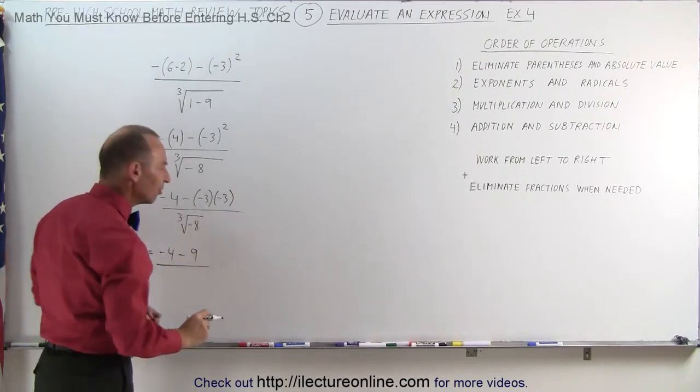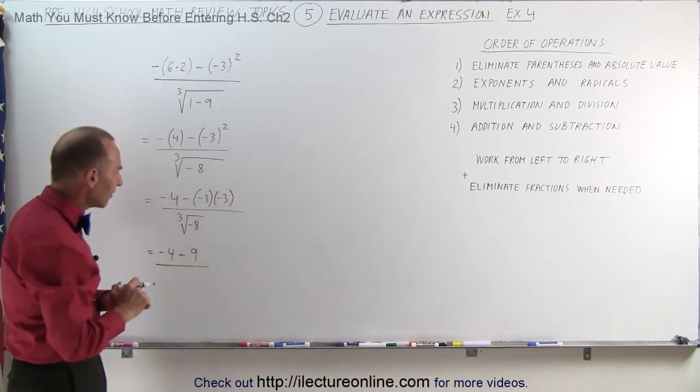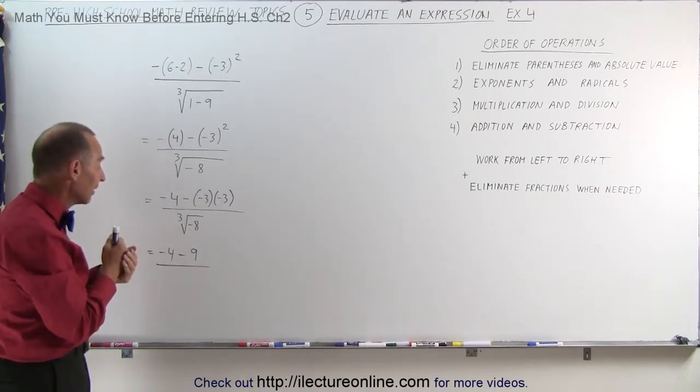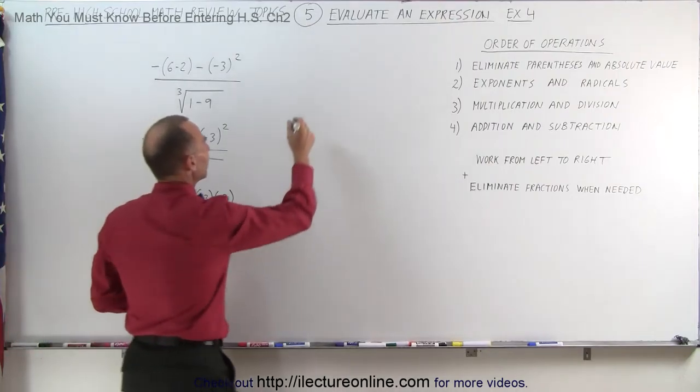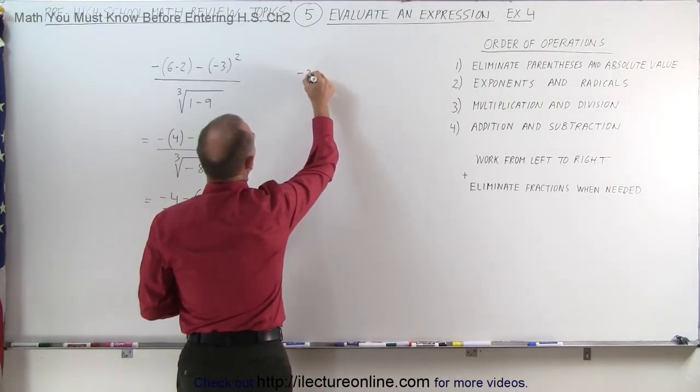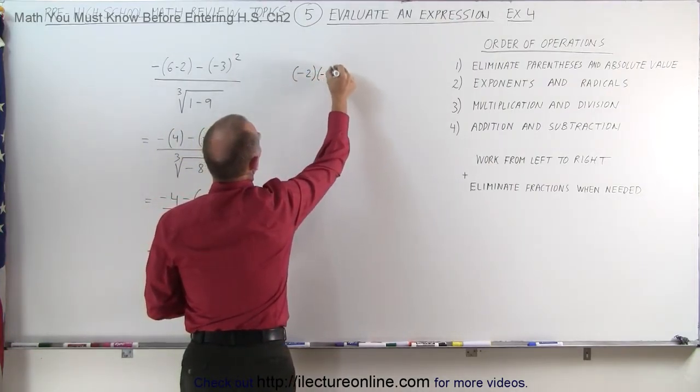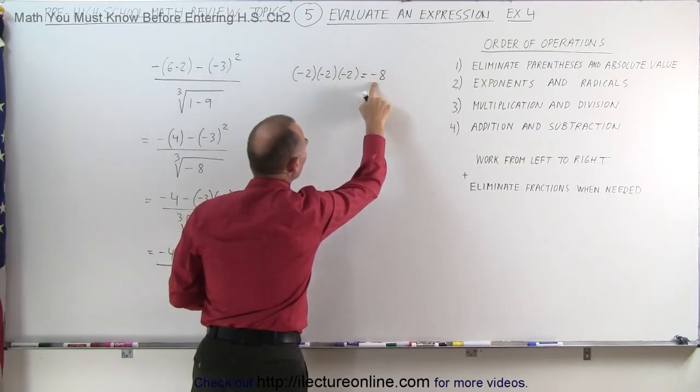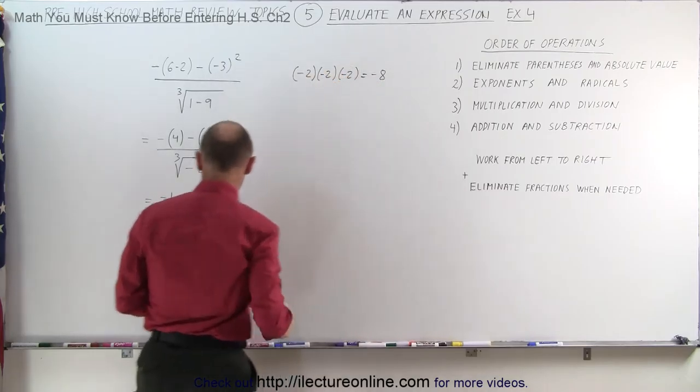Divided by, what's the cube root of minus 8? Well, I'm looking for a number when I multiply it by itself 3 times, I get negative 8. So I believe this number will do the trick. Negative 2 times negative 2 times negative 2 is equal to negative 8, which means the cube root of negative 8 is equal to negative 2.